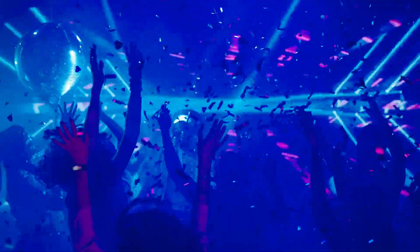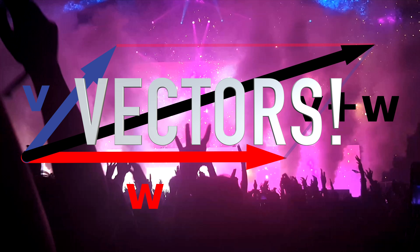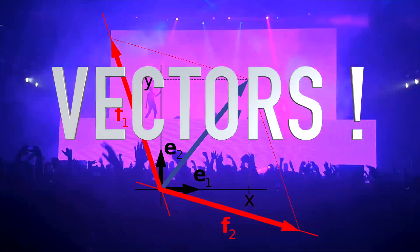In other words, qubits are inherently two-dimensional and to model this correctly we need to take some ideas of a field called linear algebra. That's right, vectors. Okay, stay with me. This will make much more sense in a minute.